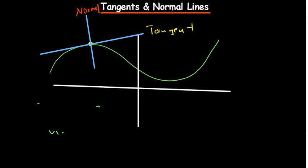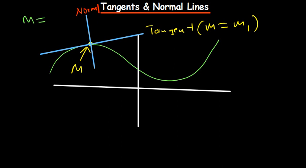The gradient of a curve at a given point is going to be equal to the gradient of the tangent at that point. Taking the gradient of the curve to be M and the gradient of the tangent to be M1, those are equal. And for the normal and the curve, their product is negative 1 — meaning M is equal to negative 1 over the gradient of the normal.